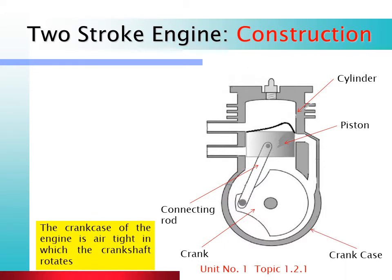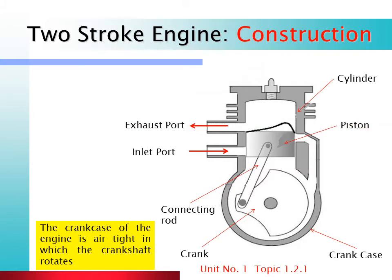A very important difference between 4-stroke and 2-stroke engines is that in the 2-stroke engine, the crankcase is airtight. The engine has three ports: the inlet port, through which fuel-air mixture enters; the exhaust port, through which hot exhaust gases exit; and the transfer port, which transfers the fresh charge from the crankcase into the cylinder. The movement of the piston opens and closes these ports.